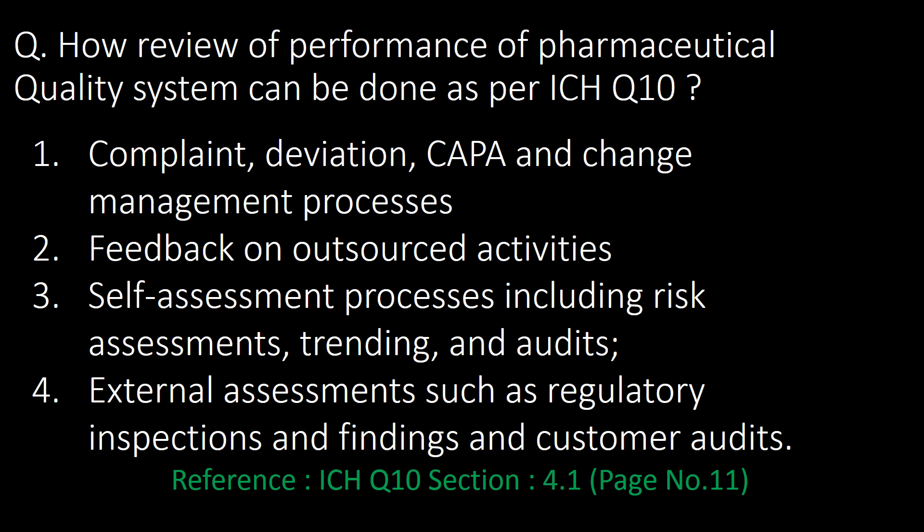How can review of performance of the pharmaceutical quality system be done as per ICH Q10? It can be done for the following QMS elements: first, complaint, deviation, CAPA, and change management processes; second, feedback on outsourced activities; third, self-assessment processes including risk assessments, trending, and audits; fourth, very important, external assessments such as regulatory inspections and findings and customer audits.